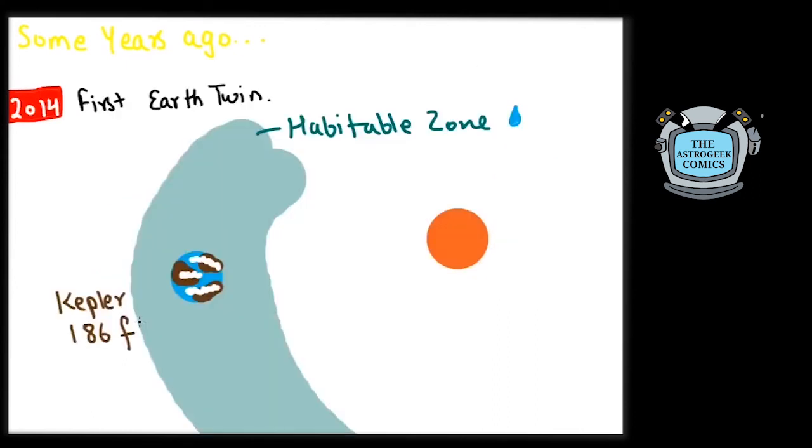The very next year, we took search for another Earth a bit further when the first Earth-sized exoplanet Kepler-186f was found in the habitable zone of its star 500 light years away.